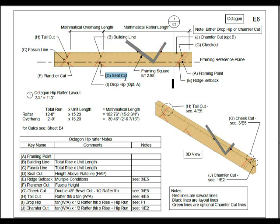Your seat cut — that's your height above plate line. In this example, that's 7 inches.